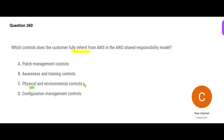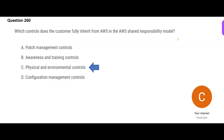Physical controls are definitely AWS's responsibility. You don't know the exact address of the data center, and even if you did, security personnel would not allow you in — and that is not your role anyway. So the option mentioning physical controls is totally correct as an AWS responsibility. The remaining options — patch management, awareness, and configuration management — you can do as a customer. You can use AWS Config for configuration management. So physical controls is my final answer.